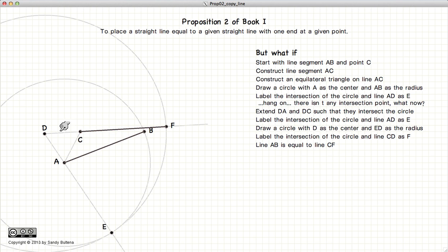And the proof is pretty much the same as before. DE and DF are equal in length because they are radii of the same circle. And DC and DA are the same length because it's an equilateral triangle.